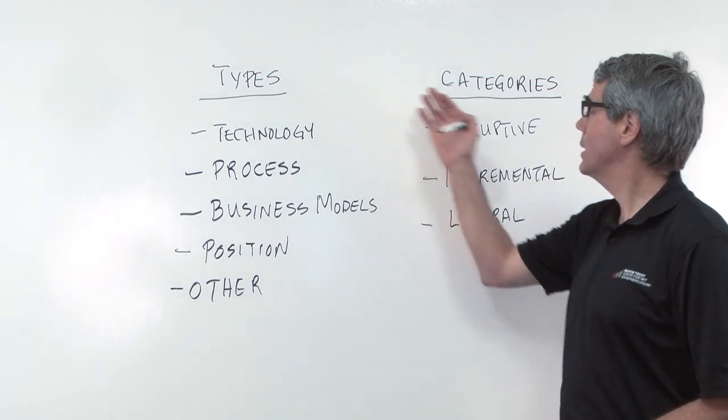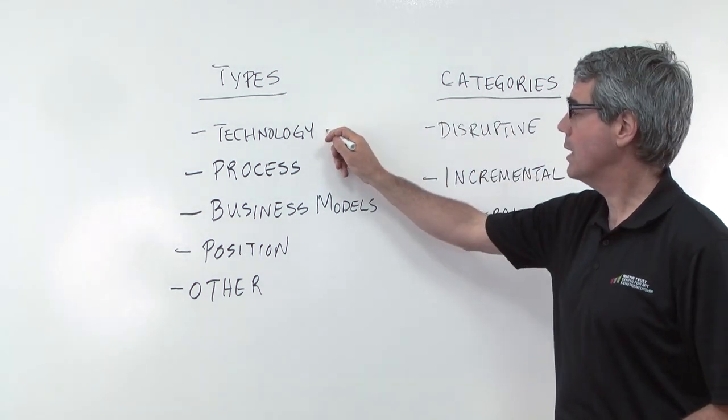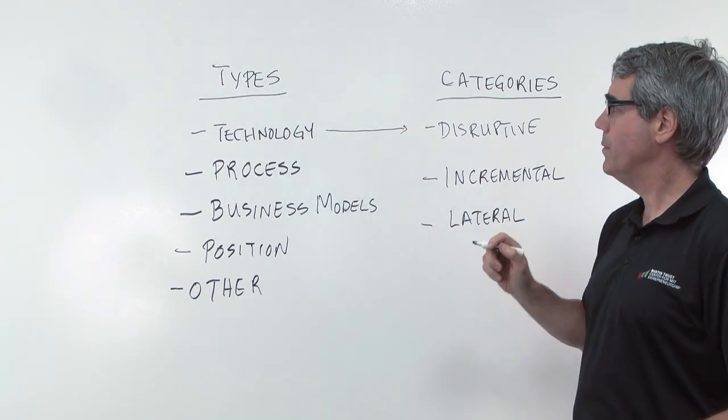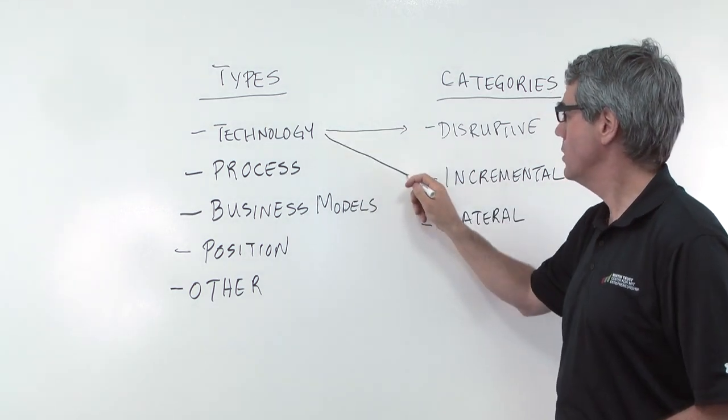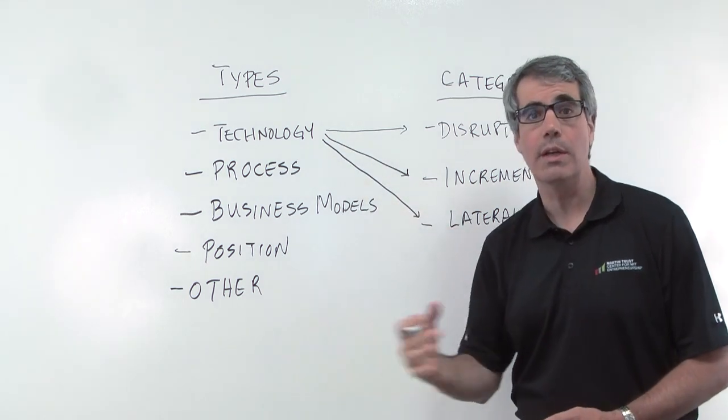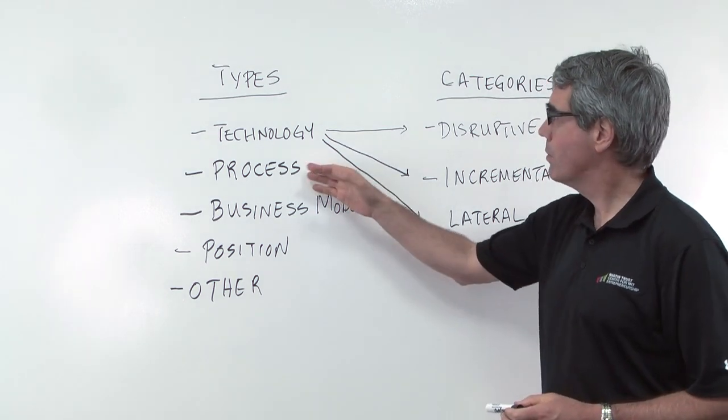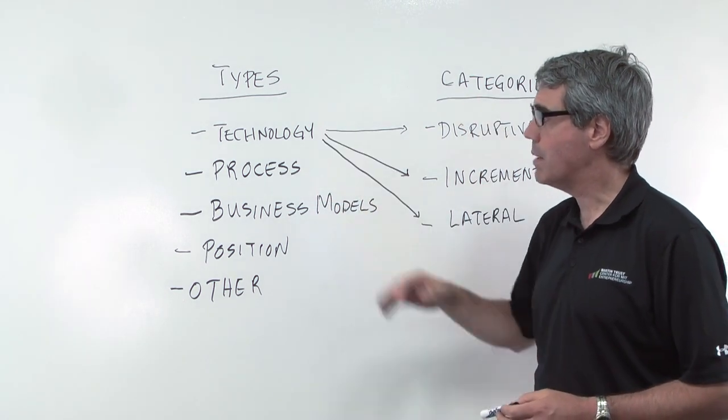Now, why do I have types and categories? Because in this case, you could have a technology that was disruptive innovation, you could have a technology that's incremental, or you could have a technology that's already worked in another industry and you bring it in. So really what you have is a matrix where you have three different categories for each type.